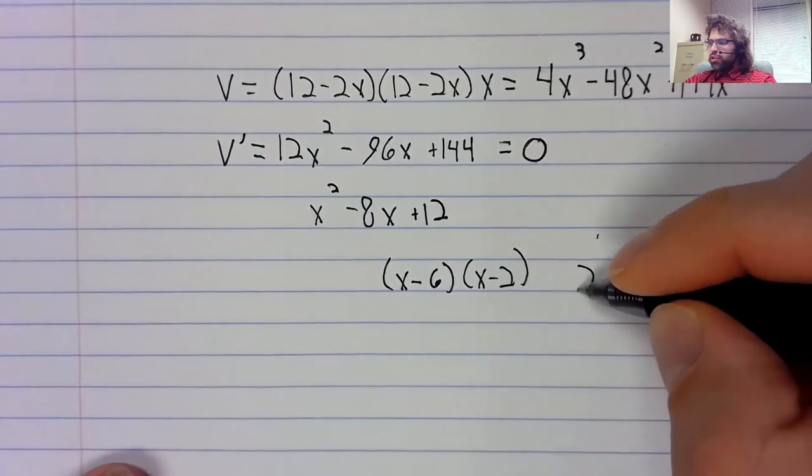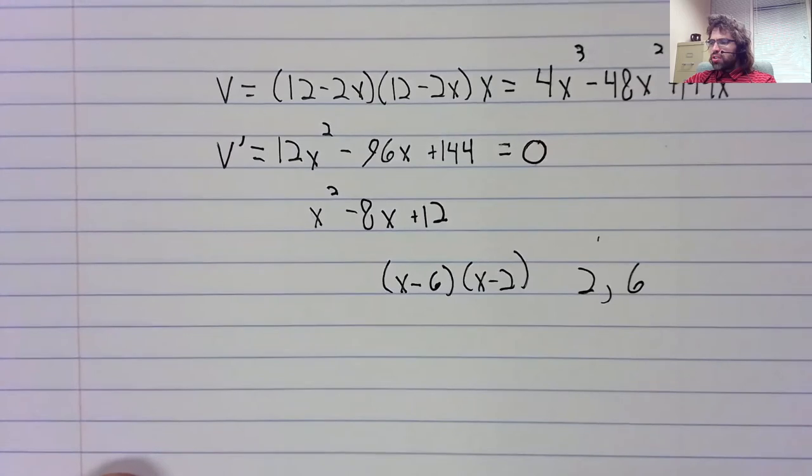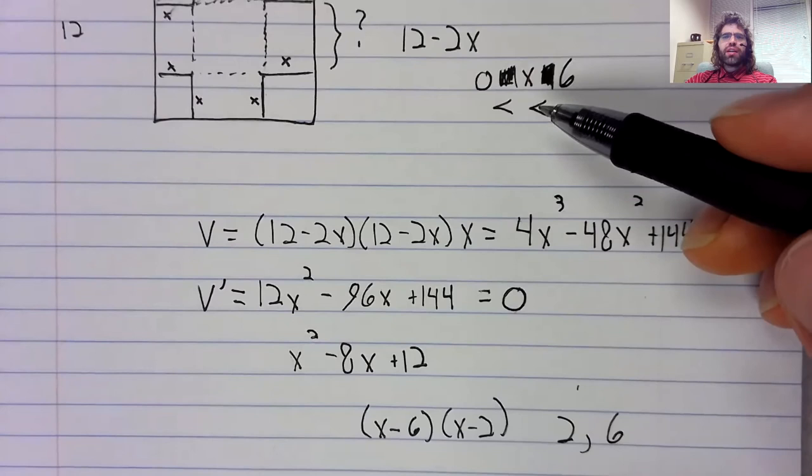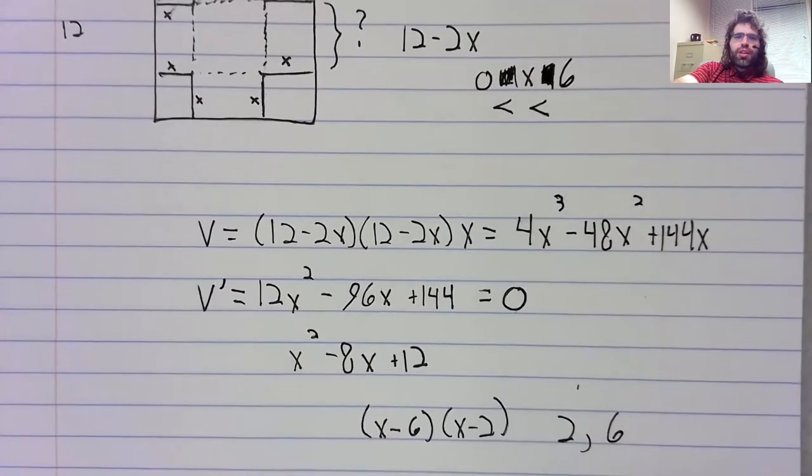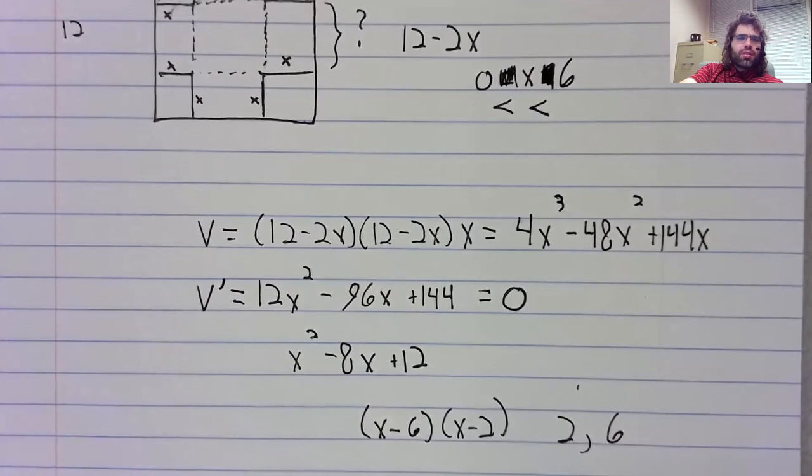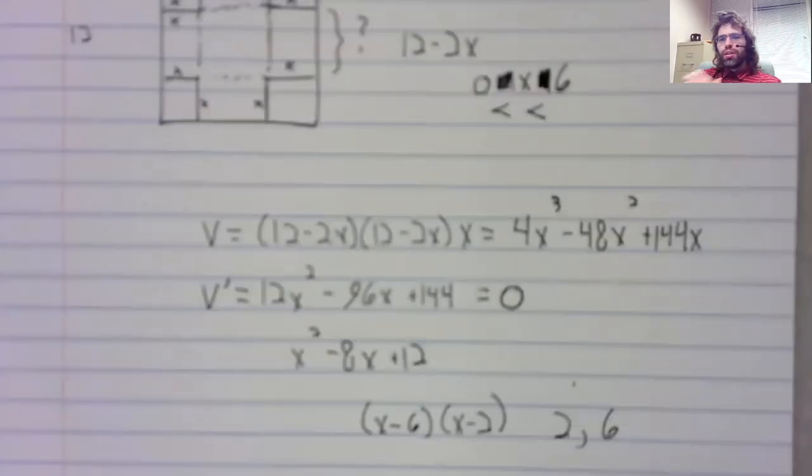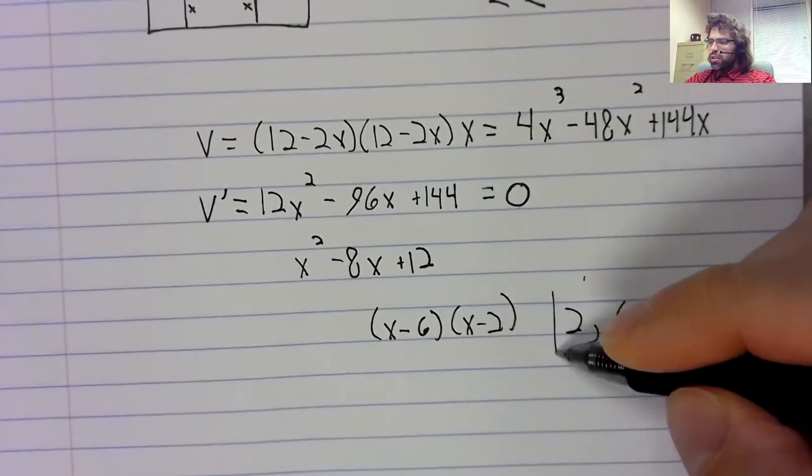So, we have two critical values, but we're looking for one between zero and six. And if we go back to the graph, six is clearly a volume of zero. That's not what we're looking for. So, the critical value at two, that is it.